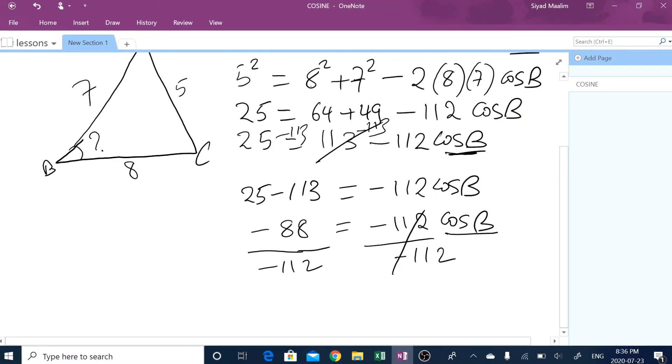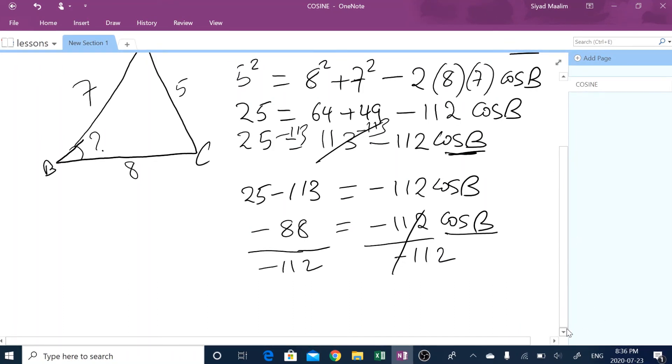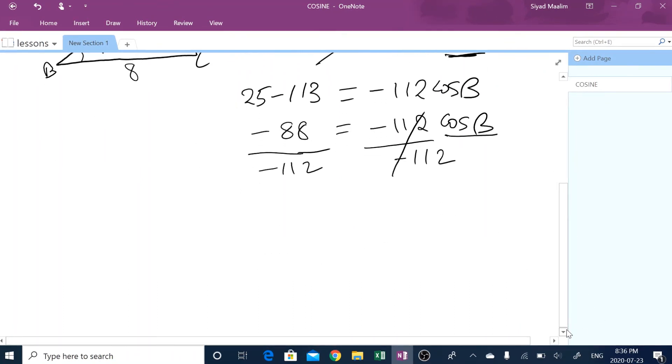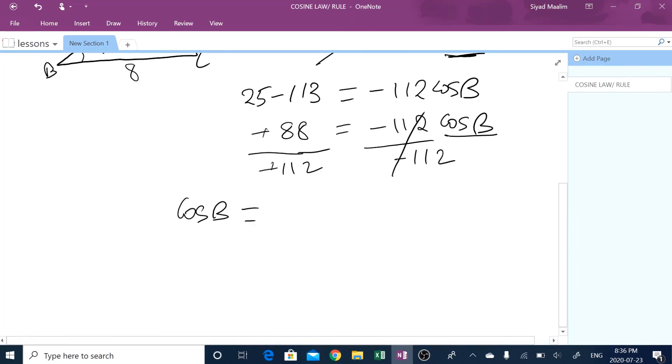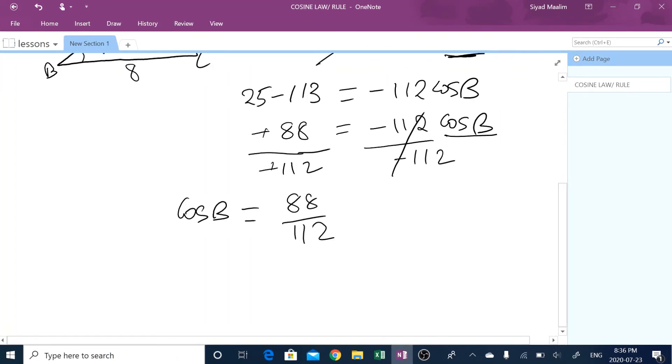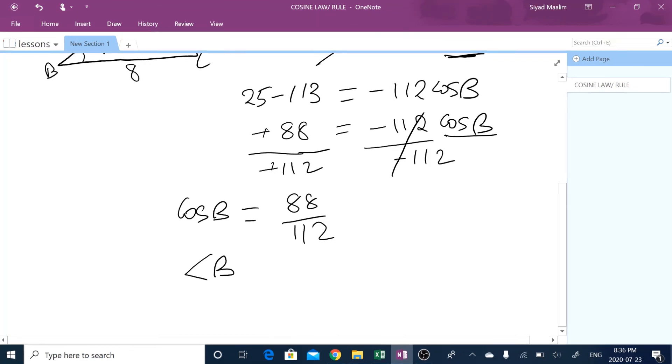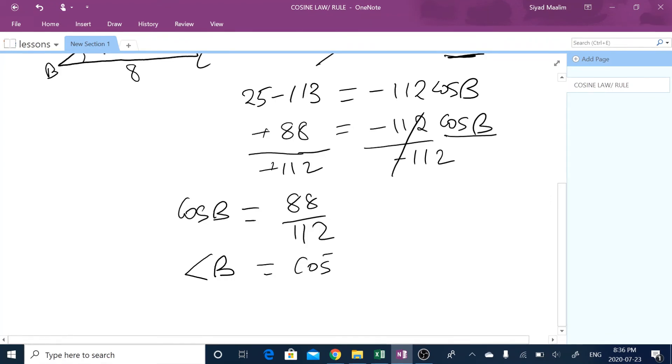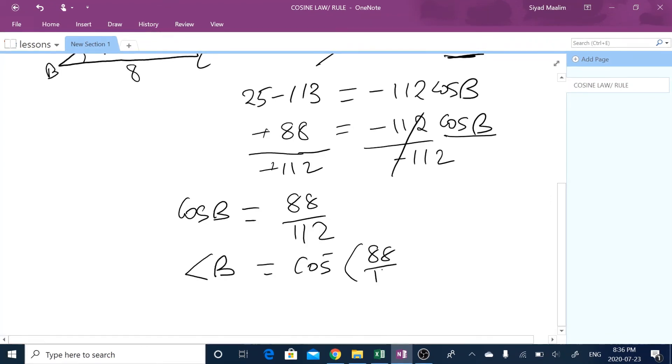So when you subtract these two, what do you get? That is roughly, I think, negative 88, equals minus 112 cos of B. In order to find cos of B, you divide both sides by minus 112. So cos of B equals, the negatives cancel, 88 divided by 112.